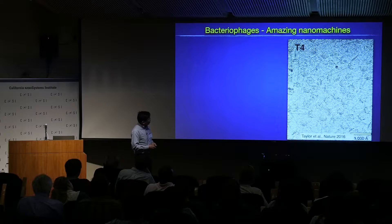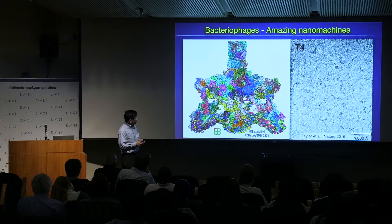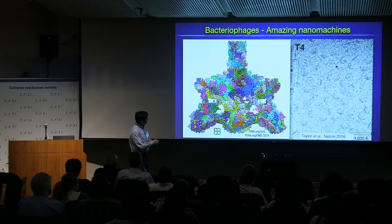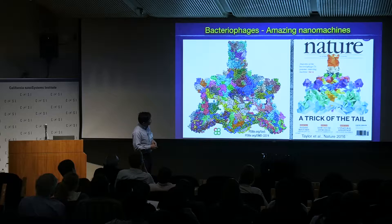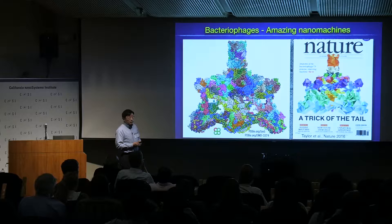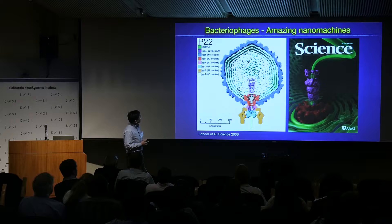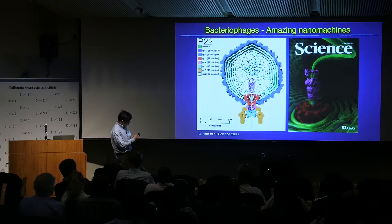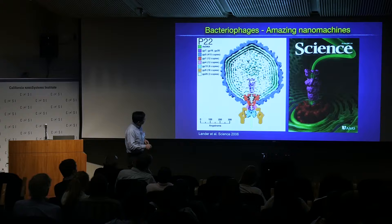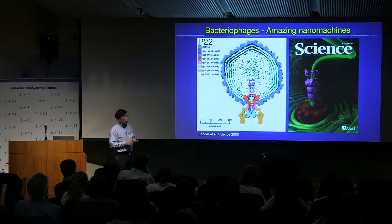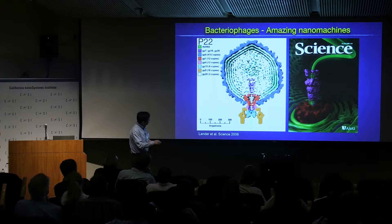More recently, during the cryo-EM revolution, the T7 phage tail has been shown as a beautiful tail machine by Peter Naiman's lab. They showed this is just a small part of the base plate — a fascinating machine — featured on the cover of Nature two years ago. And this morning we heard a beautiful story from Gabriel Lander.